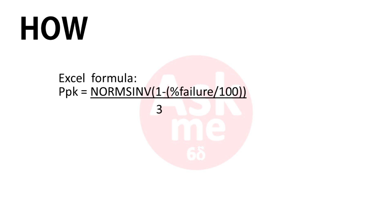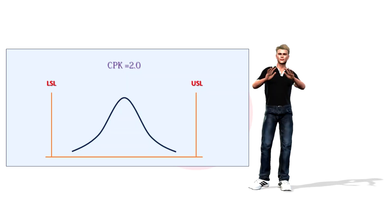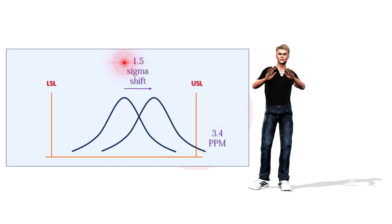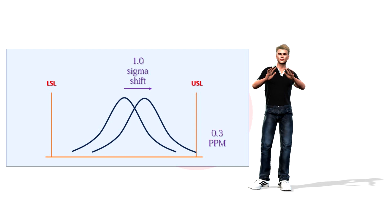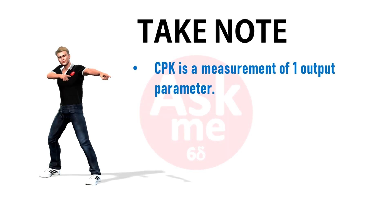We also know that every process has variation. For a process with CPK of 2 and a 1.5 sigma process variation, your final process defective rate is 3.4 PPM. If your process variation is less — for example 1 sigma — then the defective rate is 0.3 PPM.